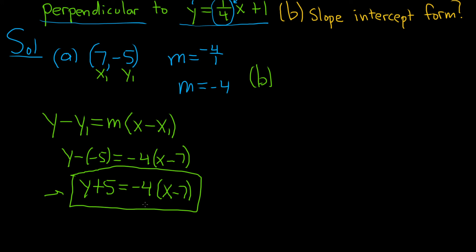For the slope-intercept form, you keep going. So I'm going to go ahead and write it down again. Slope-intercept form basically means you solve for y. So now we can distribute the negative 4. So this will be negative 4x, and then negative 4 times negative 7 is positive 28. And just subtract 5 from both sides. Good stuff. So we have y equals negative 4x, 28 minus 5 is 23. And that would be the slope-intercept form.